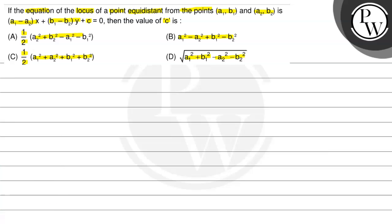इसके concept को देखते हैं। Question क्या कह रहा है? Locus of a point equidistant from the points — कोई एक point है जिसका locus हमें दिया हुआ है। यह locus दो दिये हुए points से equidistant है। Equidistant मतलब बराबर दूरी पर है।